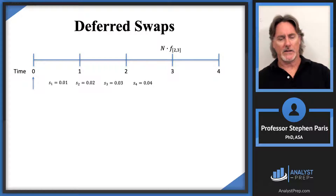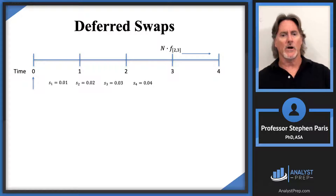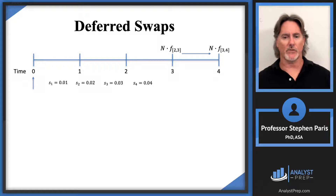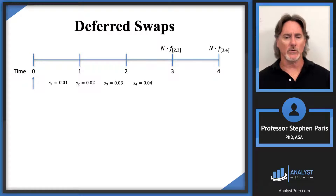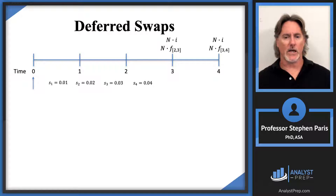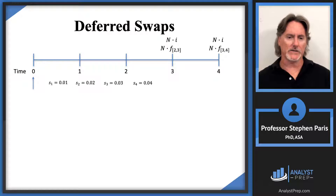Since it's a two-year swap, there's one more year. From time three to time four, the interest payment at time four equals the notional amount times the forward rate from time three to time four. Those are the payments being swapped — based off forward rates that won't be equal to each other — and I want to swap those for interest payments based off a fixed interest rate i, so a notional amount times i.